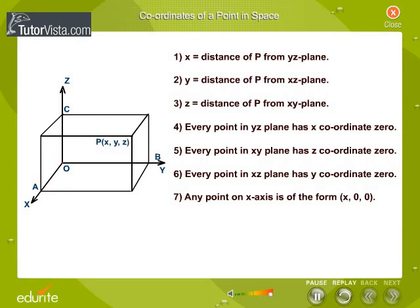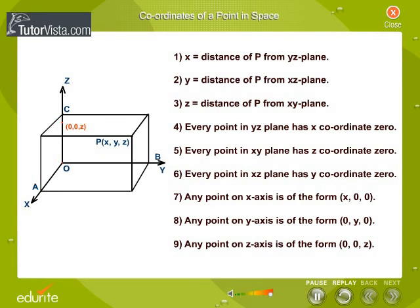Any point on x-axis is of the form (x, 0, 0). Any point on y-axis is of the form (0, y, 0). Any point on z-axis is of the form (0, 0, z).